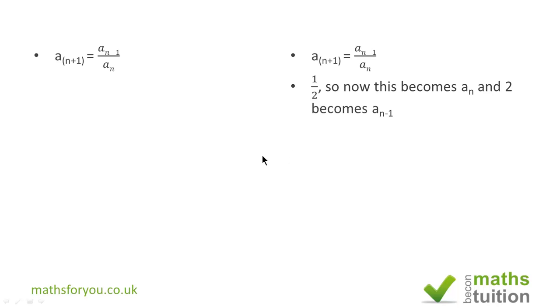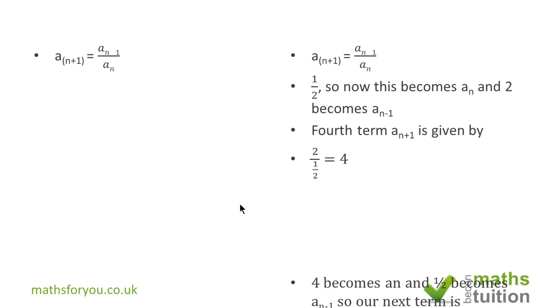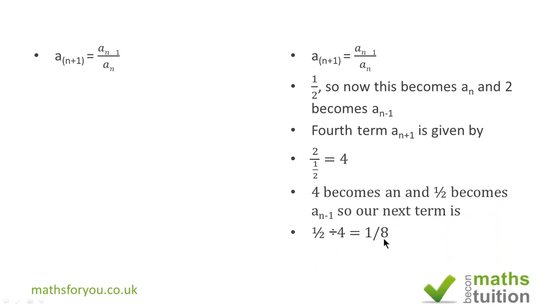To get our fourth term, a sub n minus 1 is now 2 and a sub n is now 1/2. If we divide 2 by 1/2 we get 4. Next time around, a sub n minus 1 is now 1/2 and a sub n is 4. If we divide 1/2 by 4 we end up with 1/8.